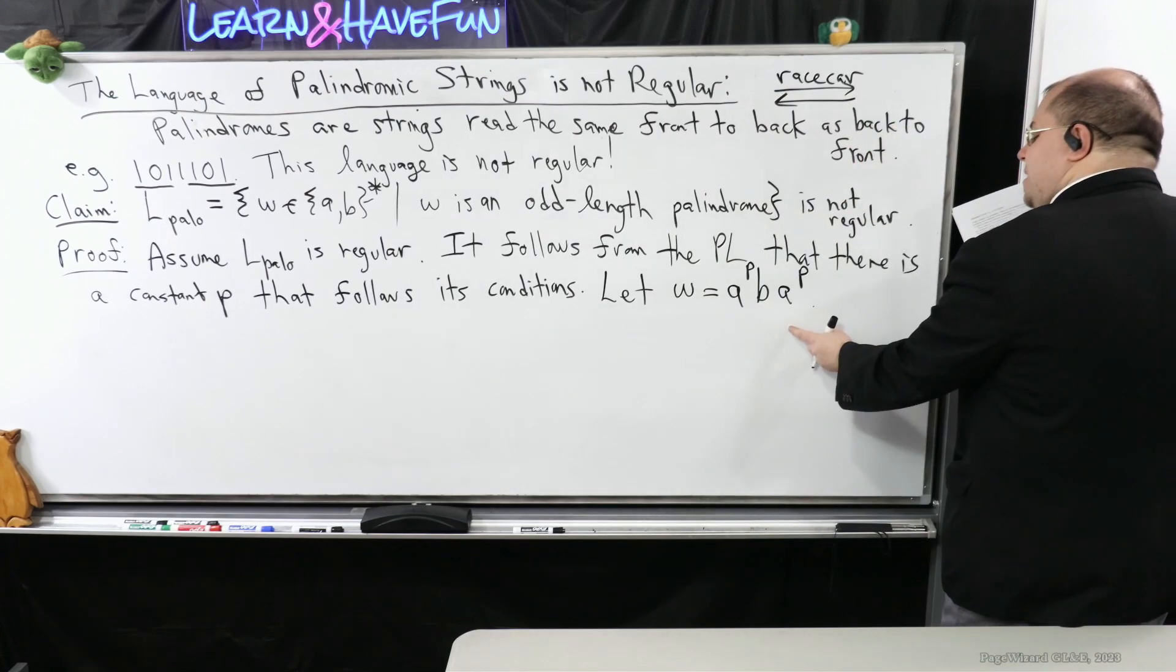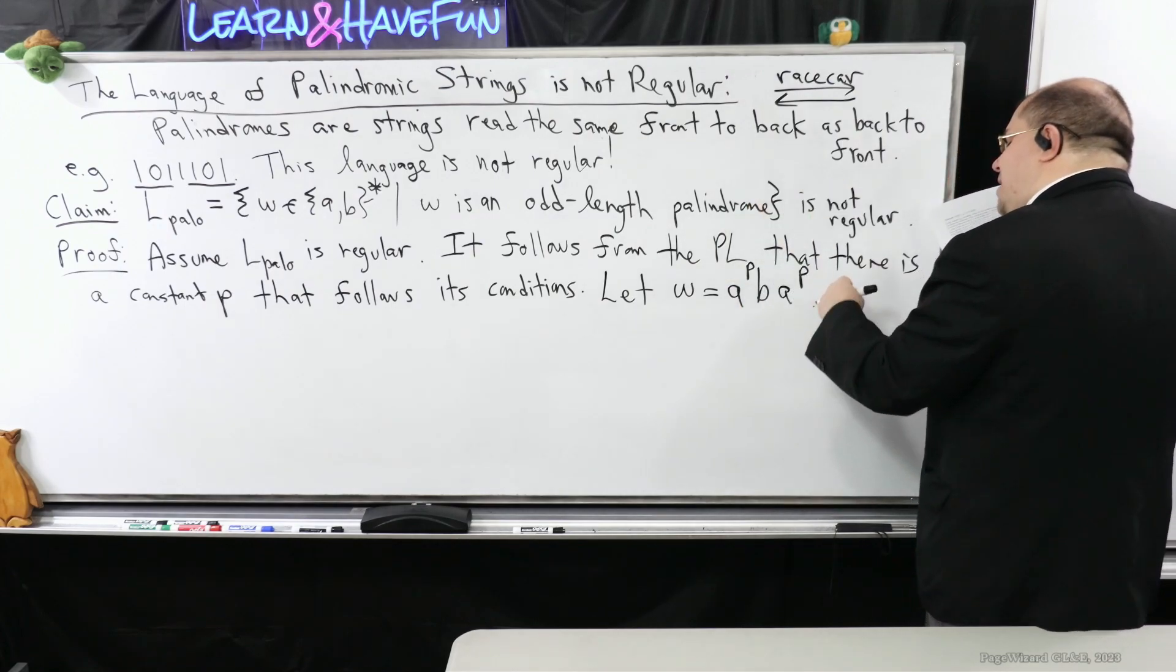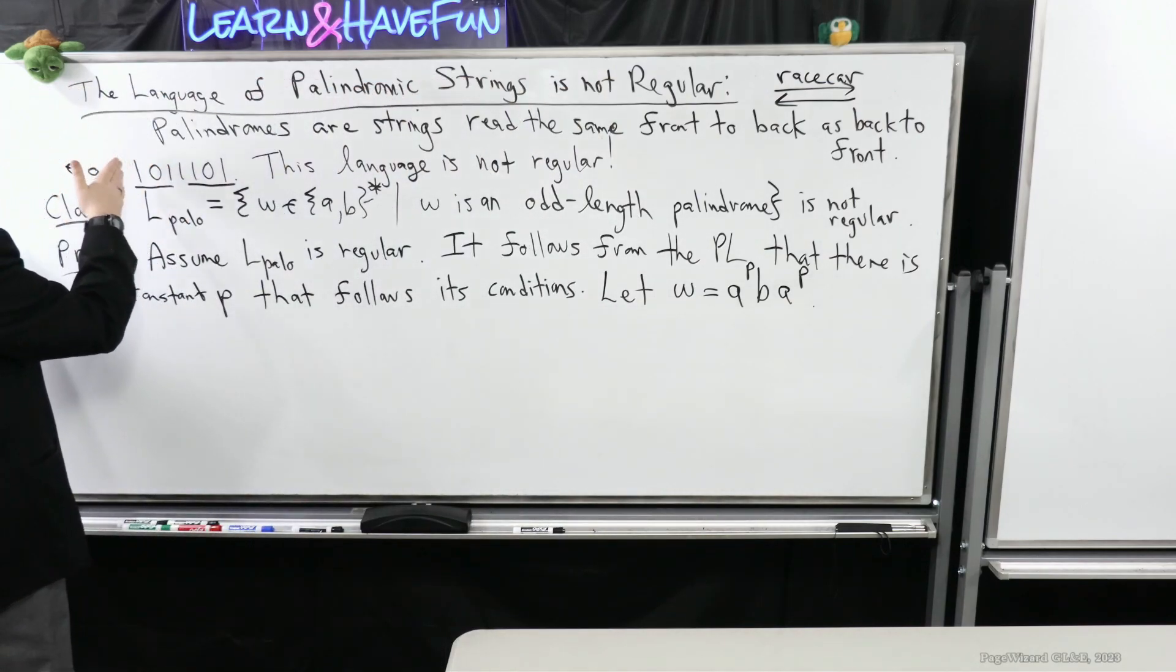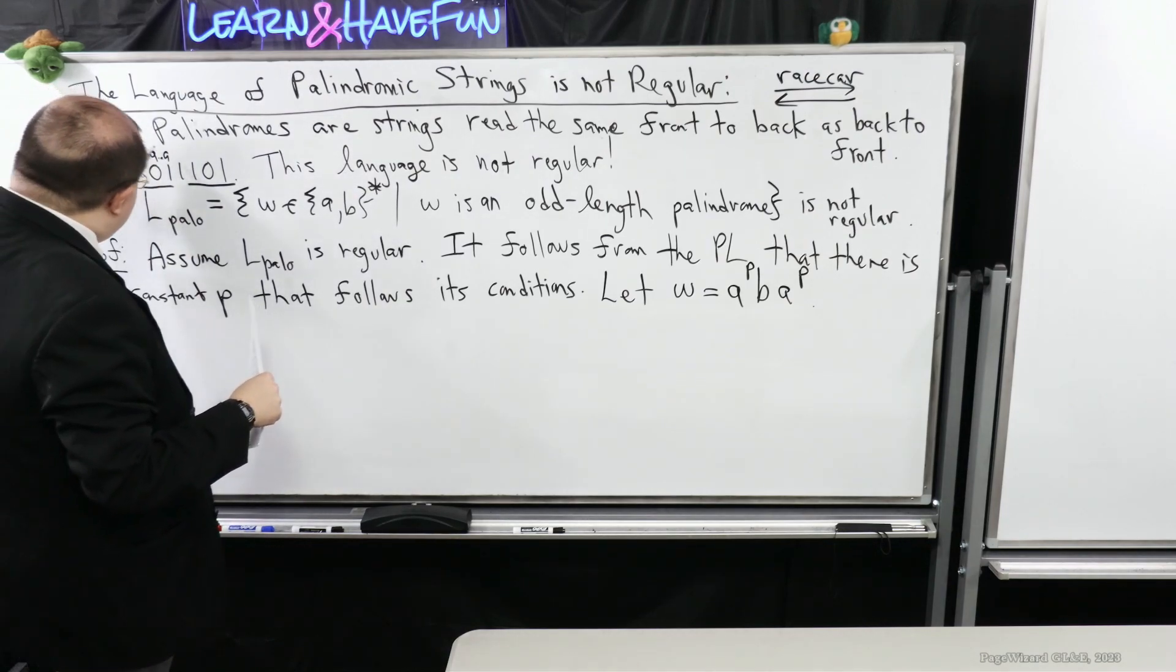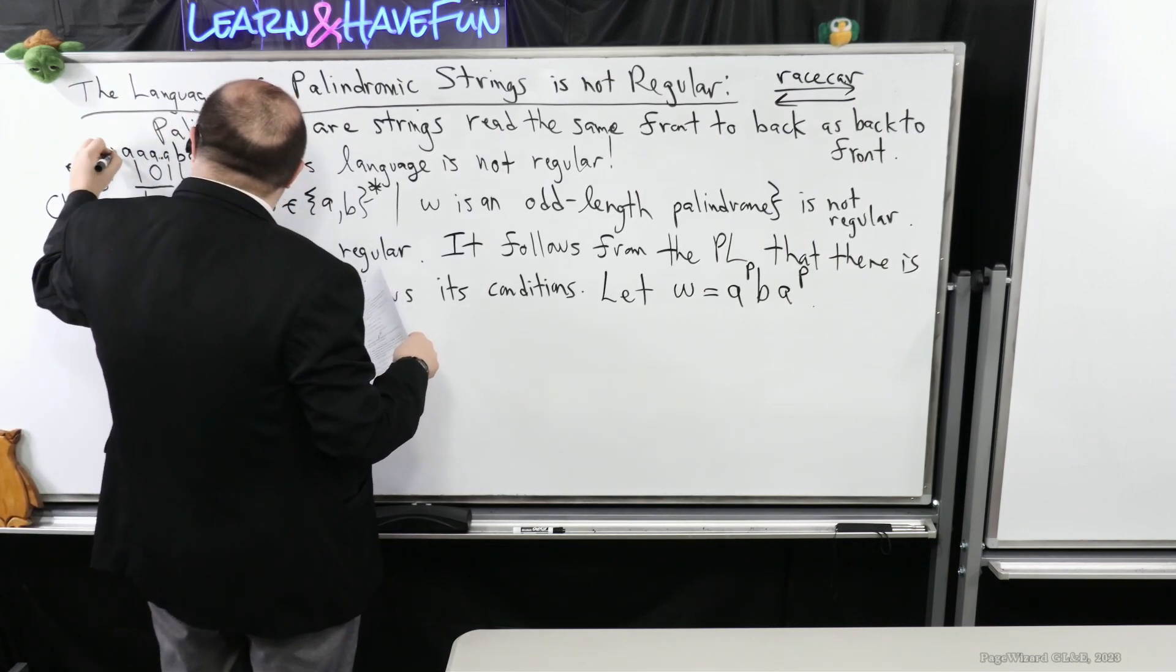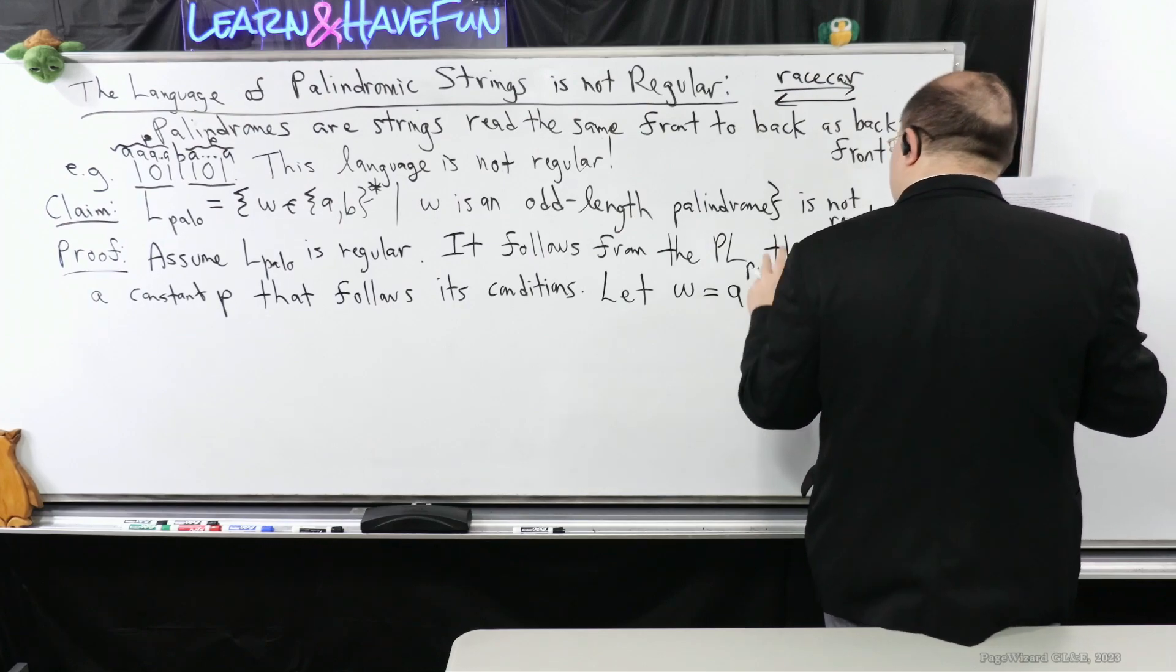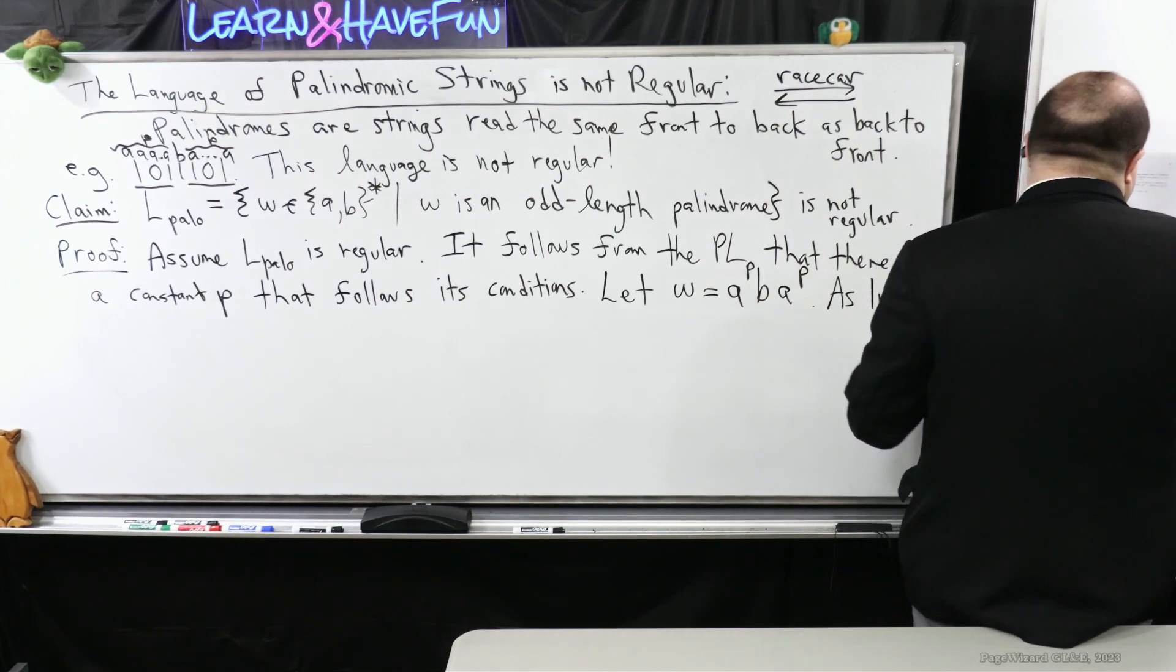You'd agree with me that this is indeed a palindrome, right? It's just going to be a bunch of A's, but there's going to be exactly P of them, then a B, then there's going to be exactly P A's that follow the B. Similar to the form we have here, except now I literally just made them all A's. I have a bunch of A's, but there's exactly P of them. Then I have a B, then I have a bunch of A's, but there's exactly P of them. So this is indeed an odd length palindrome. So that's indeed in the language.